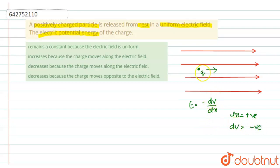And hence, the particle will be moving from a region of higher potential to a region of lower potential. And hence, the potential decreases.